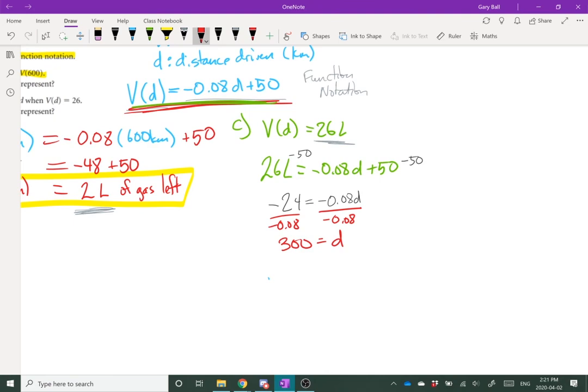Now if I rewrite it again, it means if we drive 300 kilometers, we should have 26 liters left. And that's how you work backwards through some function notation.